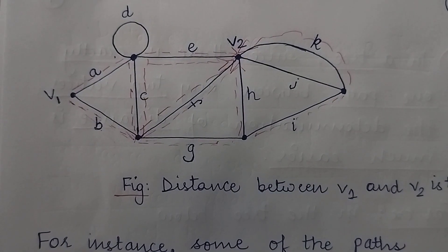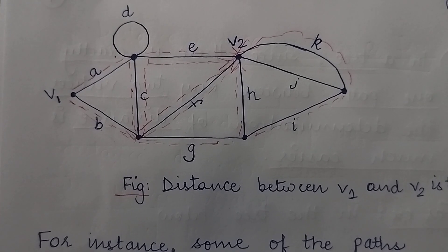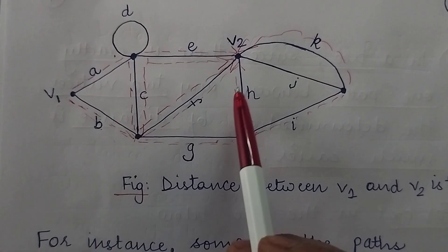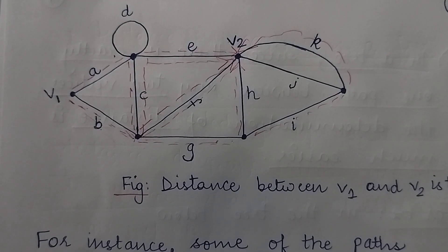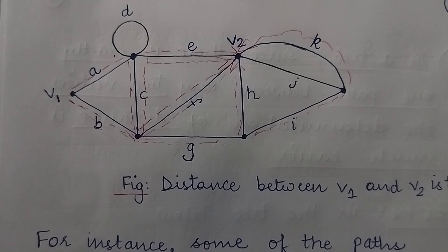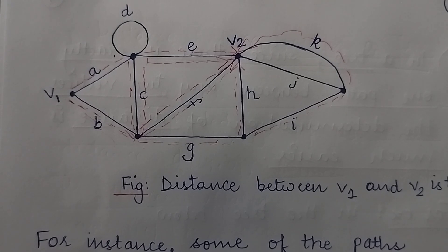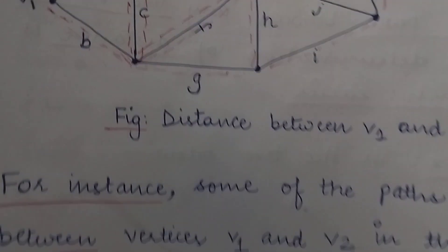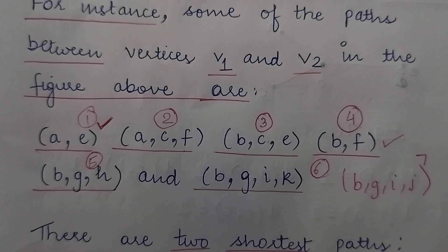So there are in total 7 available paths to reach from vertex v1 to v2. Since we are considering a graph and in a graph there is a possibility of finding more than one path between any two pair of vertices, we first figure out all those available paths. Once we find all the available paths, we find out the one with the shortest path.